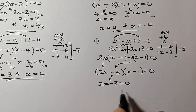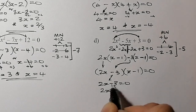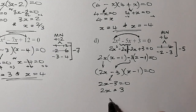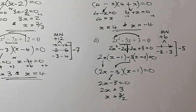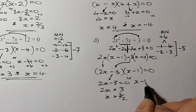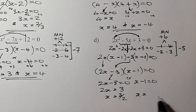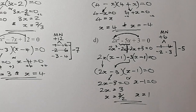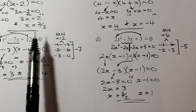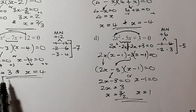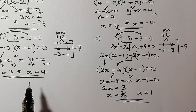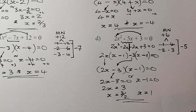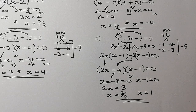Solving from the factorized form: 2x − 3 = 0 gives 2x = 3, so x = 3/2. And x − 1 = 0 gives x = 1. Remember, when we find these solutions by factorizing, they represent the x-coordinates where the quadratic graph crosses the x-axis. That completes solving quadratic equations by factorizing — the final topic in this series will be the quadratic formula.